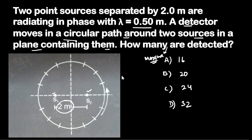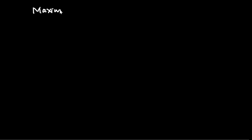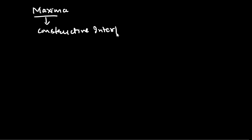In this case, we are asked how many maxima will we detect. This is a detector which rotates in this direction. How many maxima will we detect at this detector? First of all, you need to know the condition for maxima. Maxima means constructive interference, and for constructive interference between two waves, we need to know the conditions.